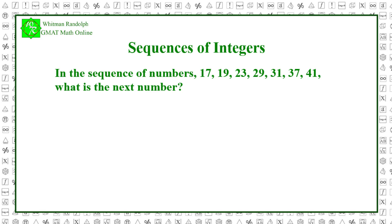In the sequence of numbers 17, 19, 23, 29, 31, 37, 41, what is the next number? Here are some possible answers. Let's find the solution.